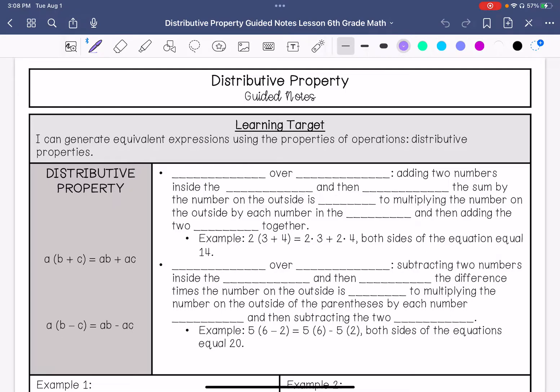So we're going to talk about multiplication over addition. When you are adding two numbers inside a parenthesis and then multiplying the sum by the number on the outside, it is equal to multiplying the number on the outside by each number in the inside, and then adding the two sums. That's a lot of words, so I'm going to show you an example of this.